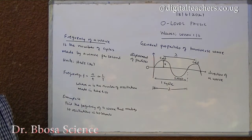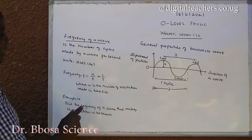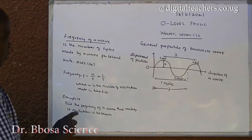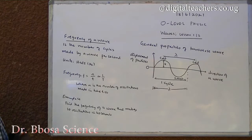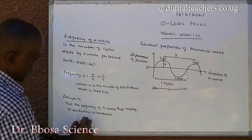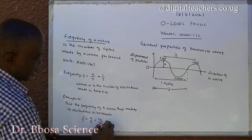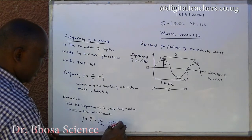Frequency of a wave is the number of cycles made by a wave per second. Units are hertz. Frequency is equal to n over t, or 1 over capital T — it is the reciprocal of the period — where n is the number of oscillations made in time t seconds. Example 4: Find the frequency of a wave that makes 10 oscillations in 40 seconds. Frequency f is equal to n over t, equal to 10 over 40, which is equal to 0.25 hertz.